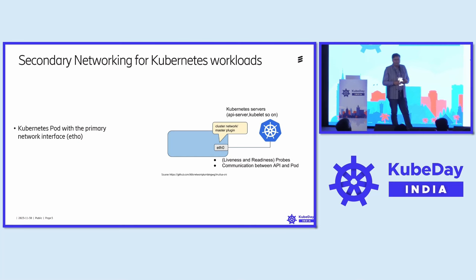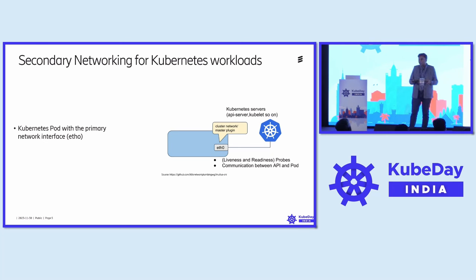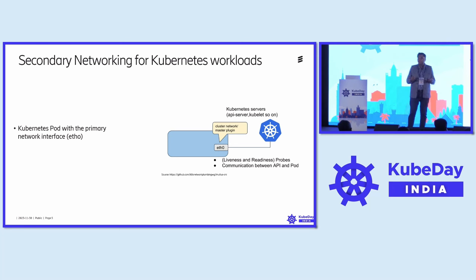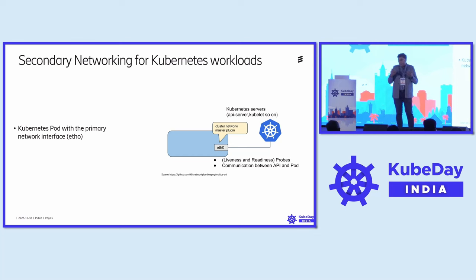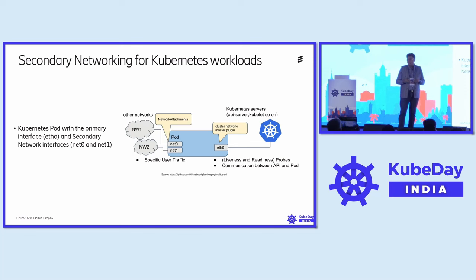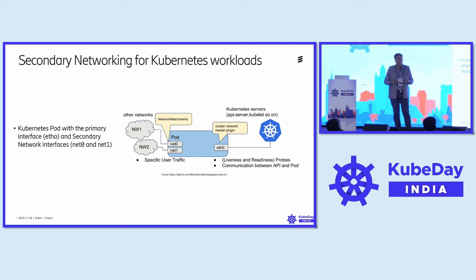What is secondary networking? When I first heard this term, I was a little confused because documentation always talks about the primary interface. A Kubernetes pod has a primary network interface — eth0. Through this interface, all communication happens: liveness probes, readiness probes, and communication channels. If there are additional network interfaces in your pods used to talk to other networks, we call these secondary network interfaces. Anything other than the primary is a secondary network interface.